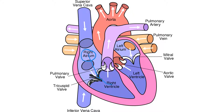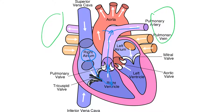From there it goes into the right ventricle, then passes through the pulmonary valve and goes up to the pulmonary circulation, splitting left and right to a lung on each side. We call that pulmonary circulation — it goes pulmonary artery, to pulmonary arteriole, to pulmonary capillary.